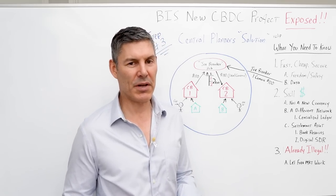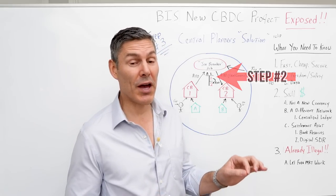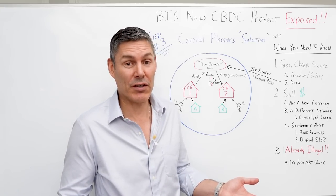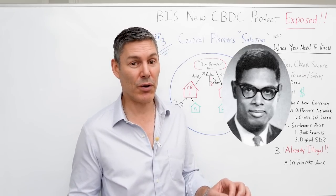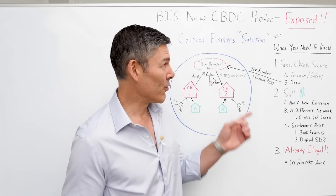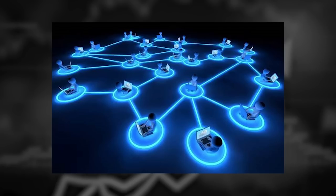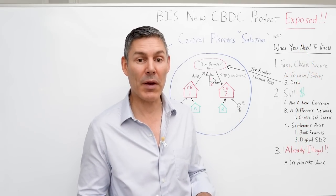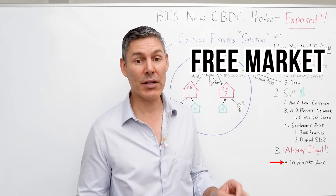Right about now some naysayers are saying: okay George, you yourself admitted in step two that the current system is slow and expensive — so if we don't have a CBDC to solve this, then what do we do? Well, first and foremost, we need to remember what Thomas Sowell teaches us: there really are no solutions, there are only trade-offs. The system that's going to create the optimal financial network is never going to come from the global elite or tyrannical government. It's going to come from the bottom up — from a decentralized approach — from good old-fashioned free market capitalism.